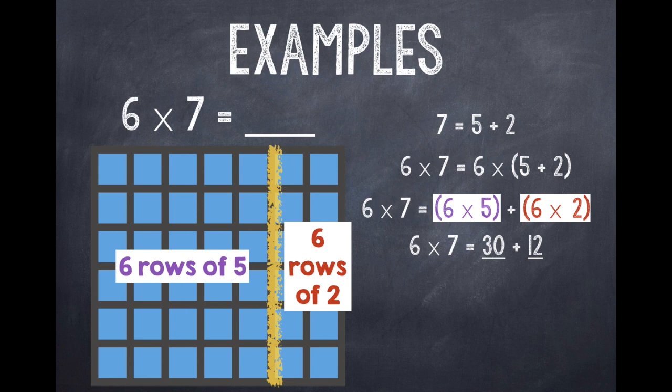So 6 × 7 is equal to 30 + 12. And then when I add 30 and 12 together, I find that 6 × 7 is equal to 42. Using the distributive property, breaking up one of our factors can just make it easier to multiply.